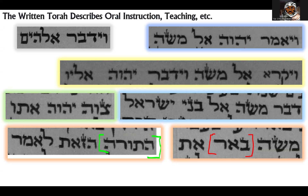One of the challenges to this is that someone says, okay, wait a minute — if all that there is was a written text, why would Moshe have to explain anything? You just write it out, give it to them, and be done. But obviously there was a reason why he had to explain things.